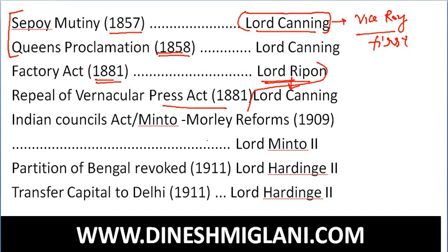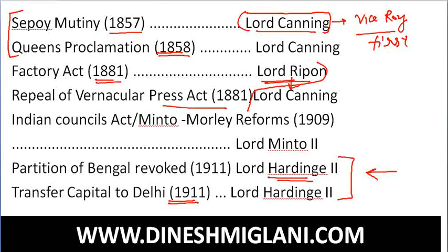The Indian Councils Act, also known as the Morley-Minto reforms, was at the time of Lord Minto. The Partition of Bengal was revoked by Lord Hardinge, and the transfer of capital to Delhi occurred in 1911 under Lord Hardinge. These are very major events. George V came to India and the Delhi Darbar was held in 1911.